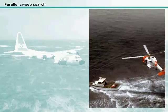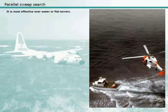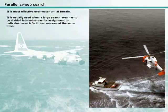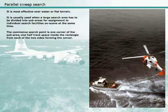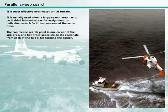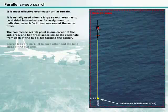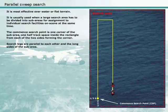The parallel sweep search is used to search a large area when survivor location is uncertain. It is most effective over water or flat terrain, and is usually used when a large search area has to be divided into sub-areas for assignment to individual search facilities on scene at the same time. The commenced search point is one corner of the sub-area, one half-track space inside the rectangle from each of the two sides forming the corner. Search legs are parallel to each other and along the sides of the sub-area.